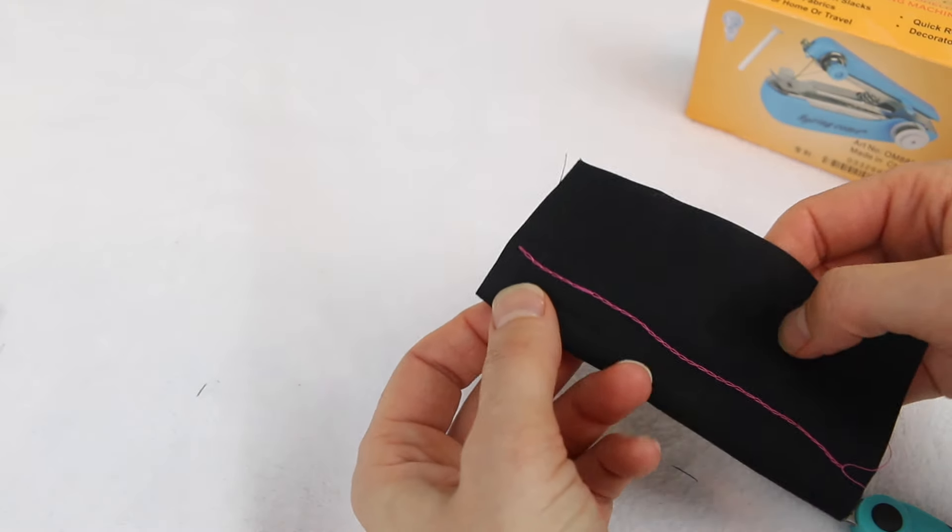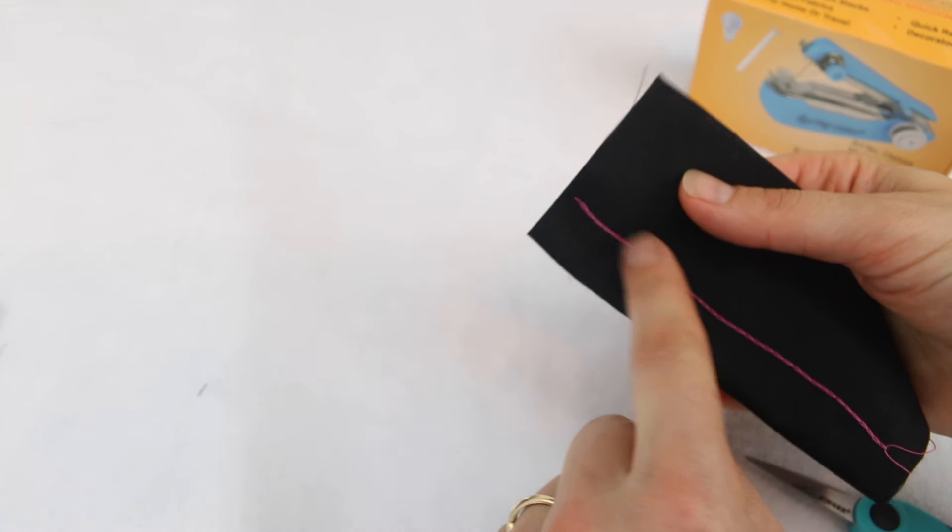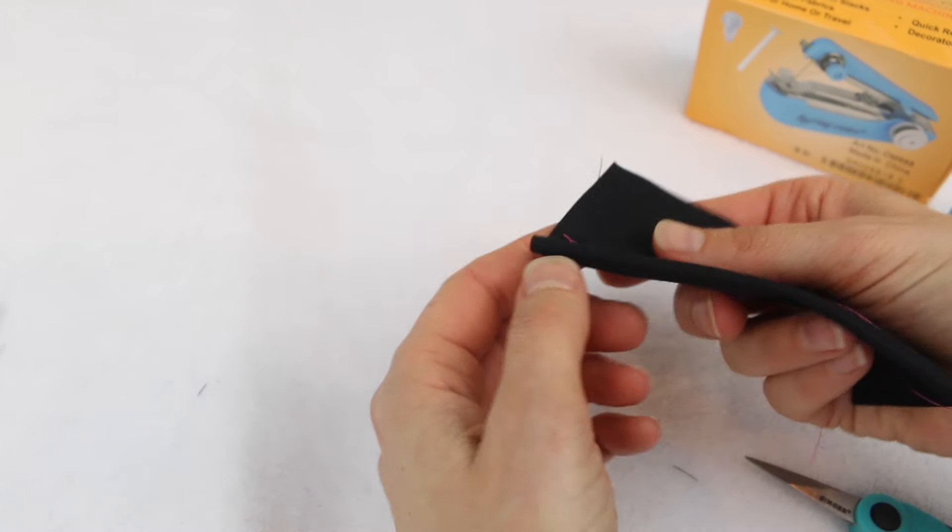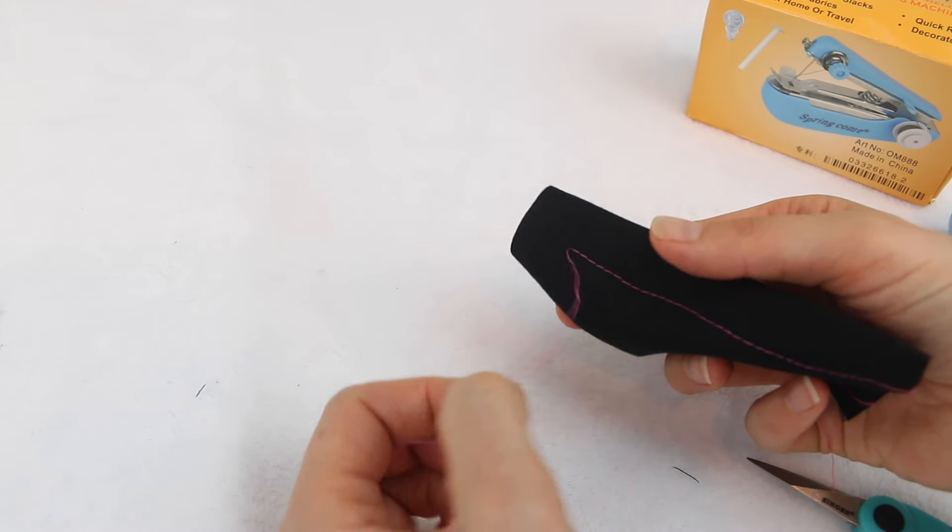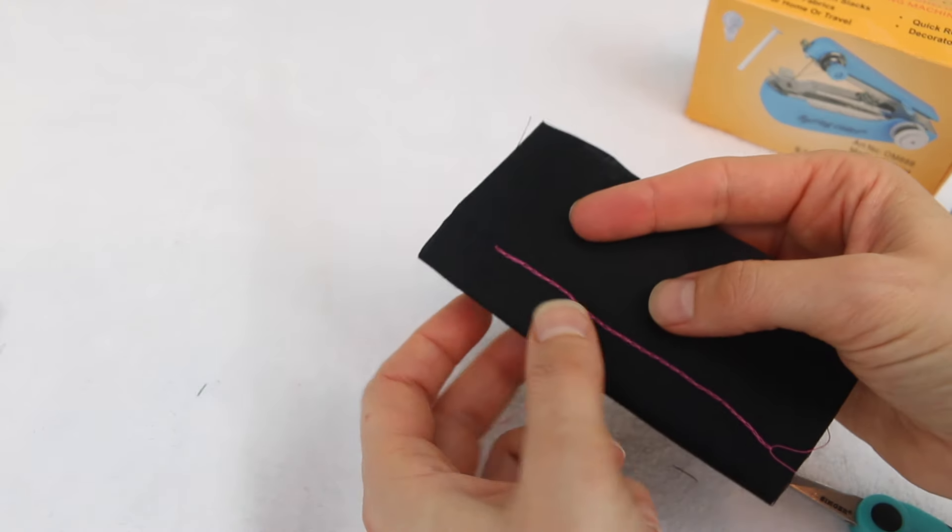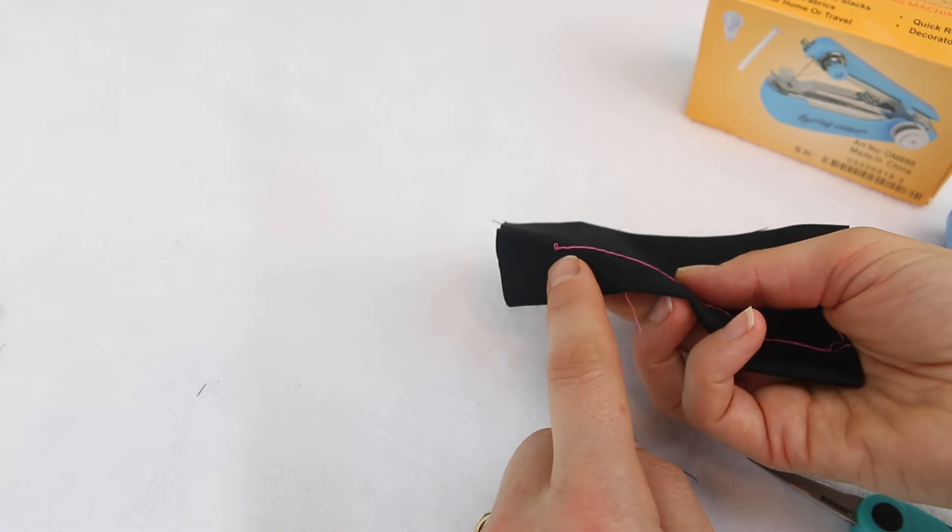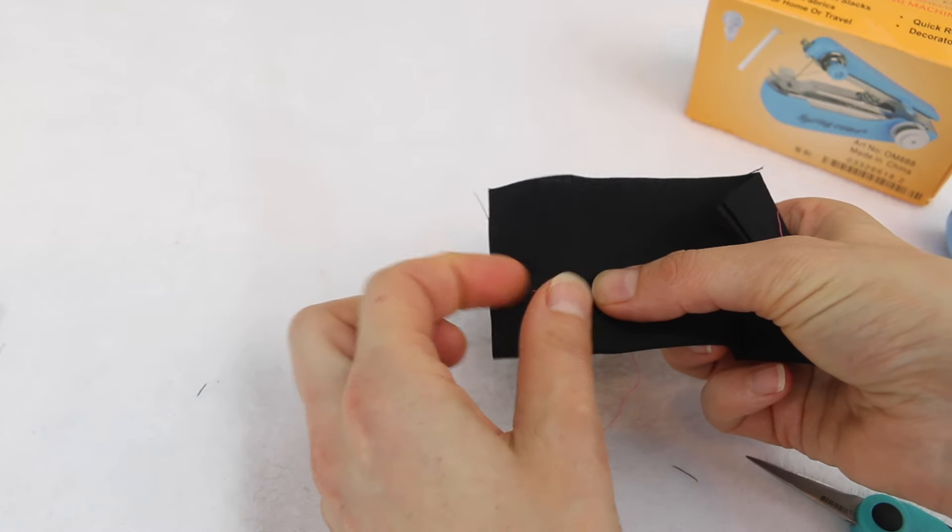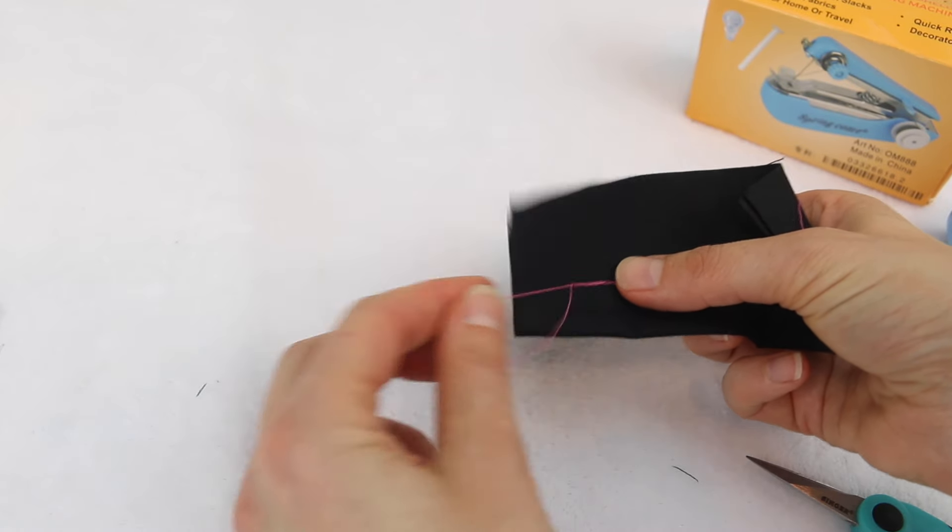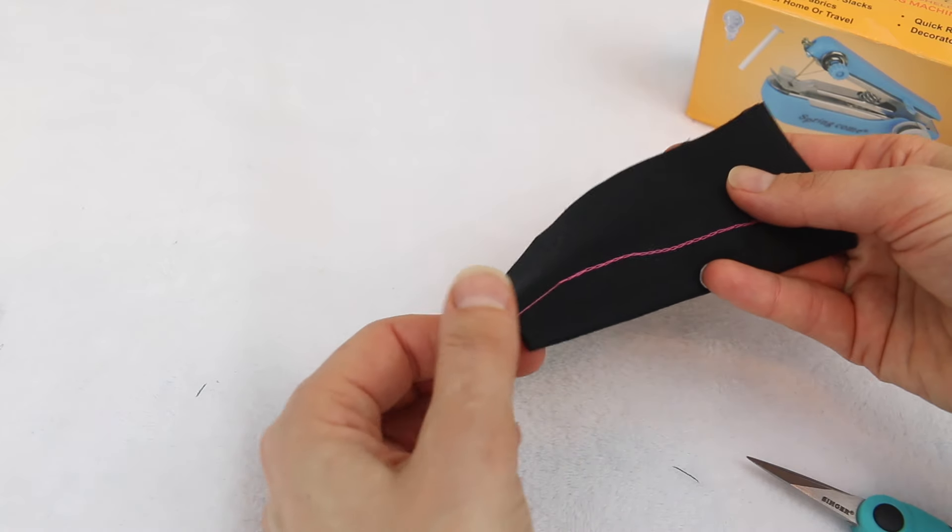So I'll just show you quickly. If you try and leave it like that and your thread pulls, it will start unraveling. Now you don't want that. So what you need to do is turn your sewing over and you'll see the last little loop there. Pull your thread through to the other side by pulling that loop. And just by doing that, that will secure your stitching.